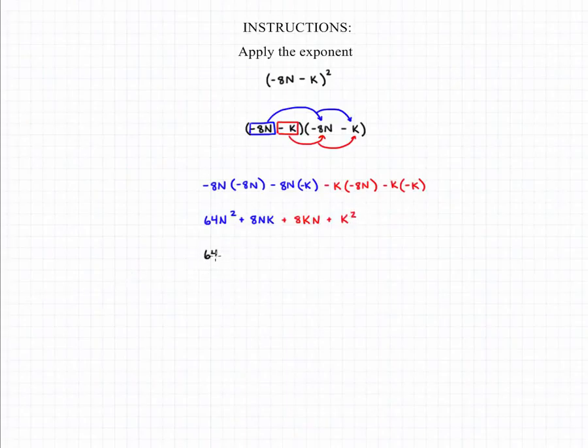Now if we rewrite everything, we'll have 64n squared plus 8nk, and we can rewrite 8kn as 8nk as well, because the order that we perform multiplication doesn't matter. This will give us two like terms in the middle of our polynomial.